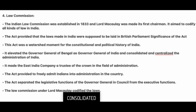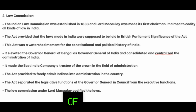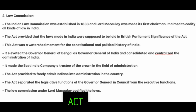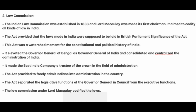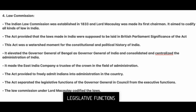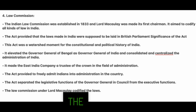It elevated the Governor General of Bengal to Governor General of India and consolidated and centralized the administration of India. It made the East India Company a trustee of the Crown in the field of administration. The act provided to freely admit Indians into administration. It separated the legislative functions of the Governor General and Council from executive functions. The Law Commission under Lord Macaulay codified the laws.